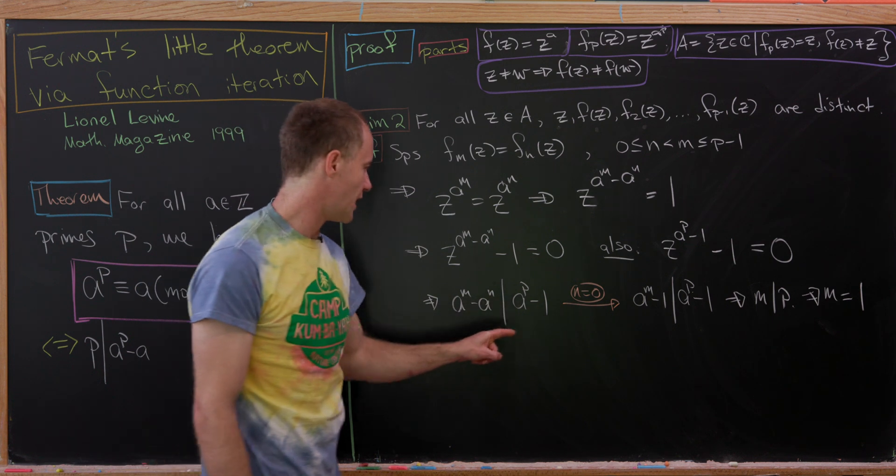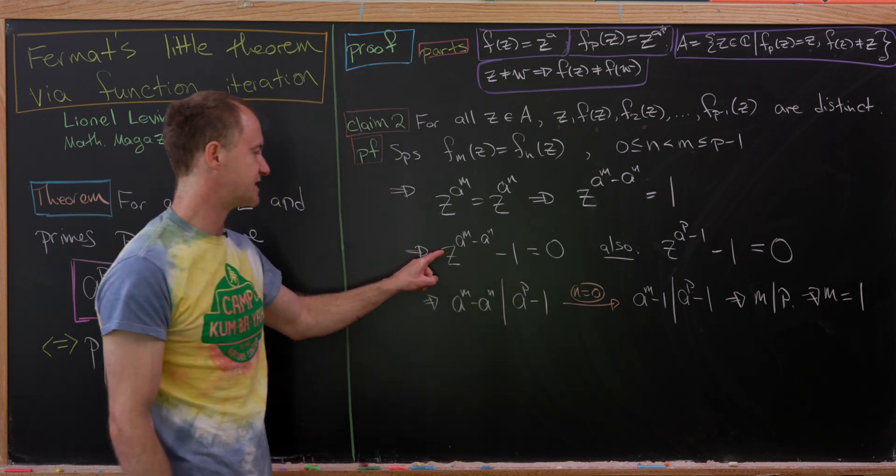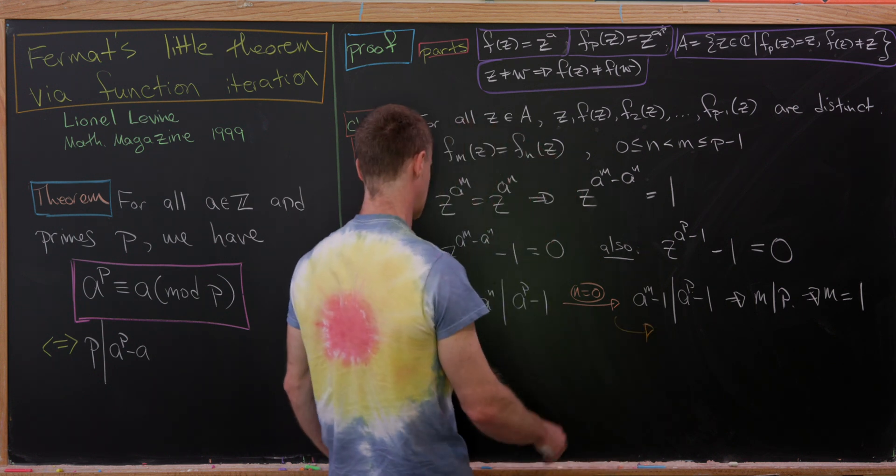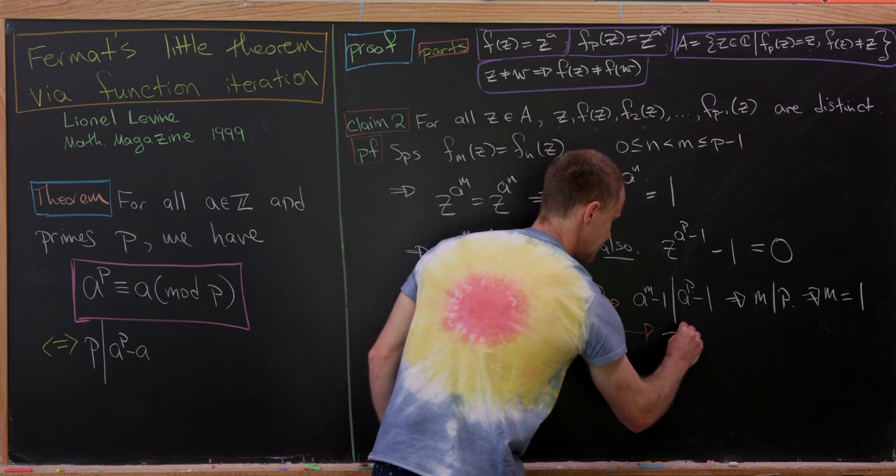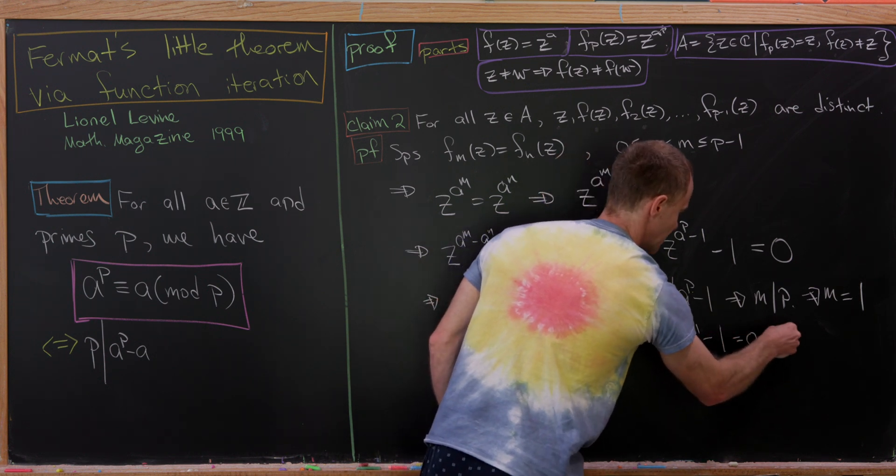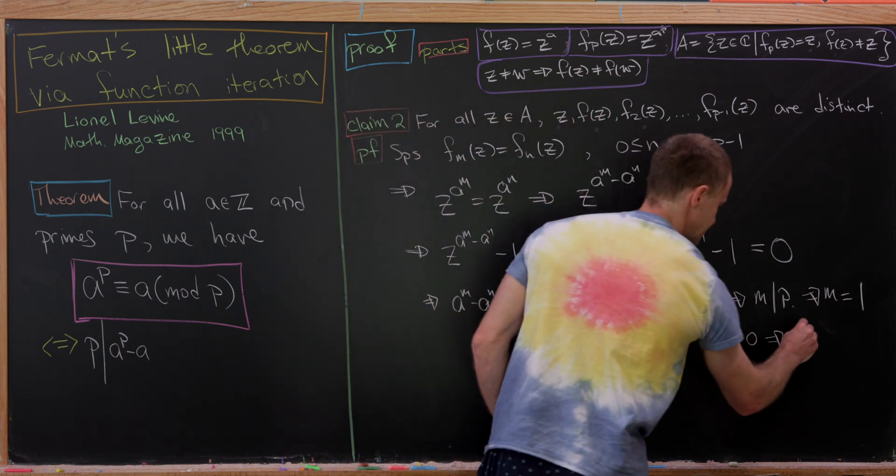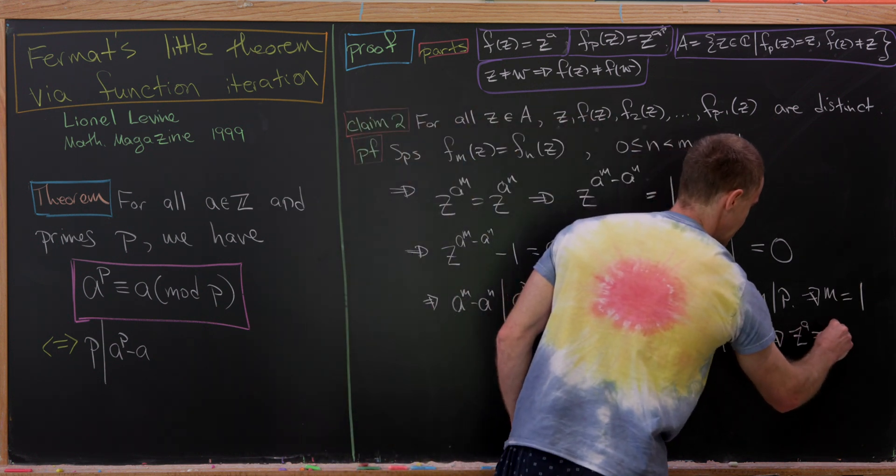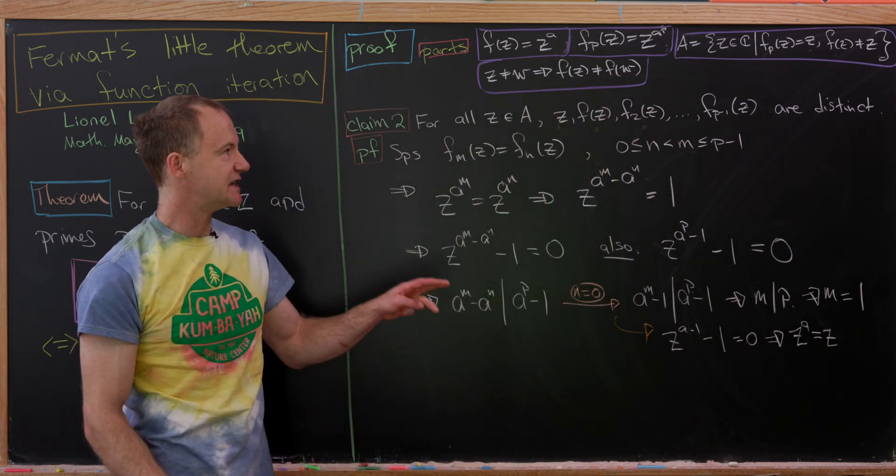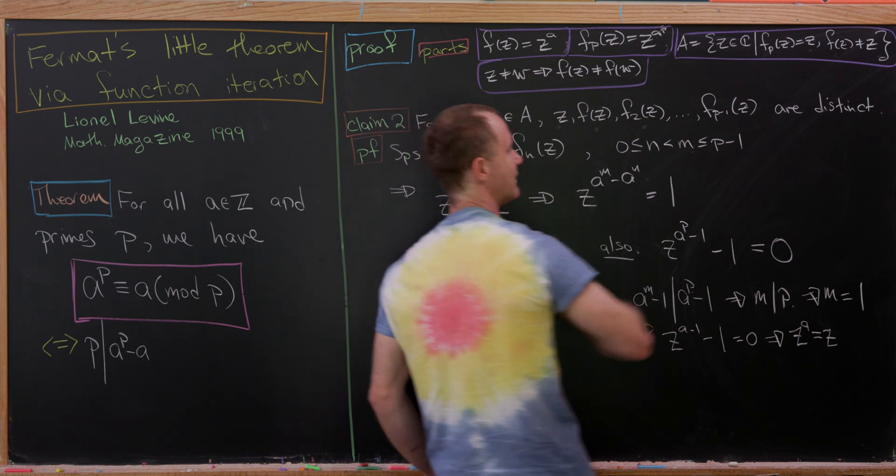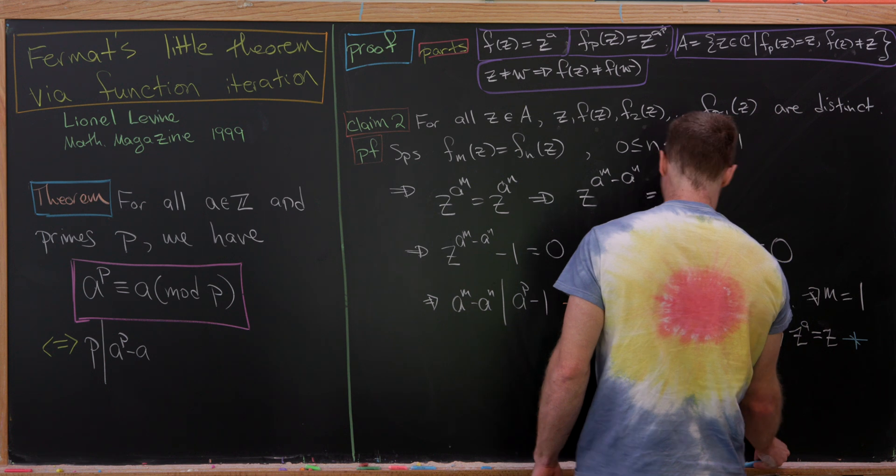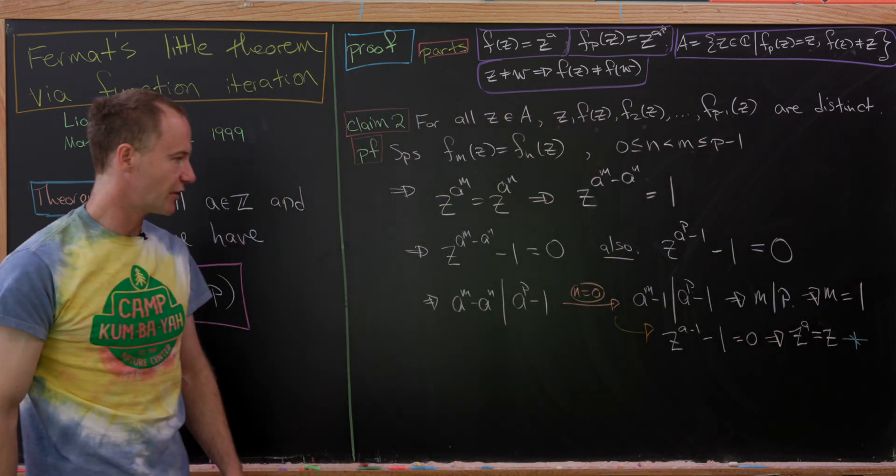But now that'll occur if and only if M divides P. So here we're using some facts about divisibility of polynomials versus some exponents here. But I think those are kind of well-known. Okay, so now we have M divides P. But since P is prime and M is less than or equal to P minus 1, that means that M is equal to 1. Okay, good. So now let's plug M equal to 1 and A equal to Z. So let's plug M equal to 1 and N equal to zero into this equation right here and see what we get. So that'll tell us what? That Z to the A minus 1 minus 1 is equal to zero. But multiplying both sides by Z, we'll see that means that Z to the A equals Z.